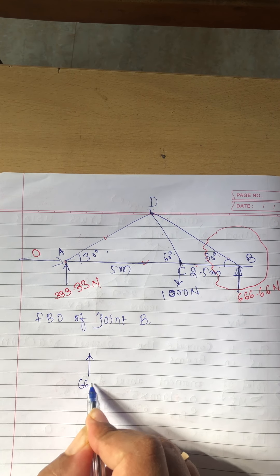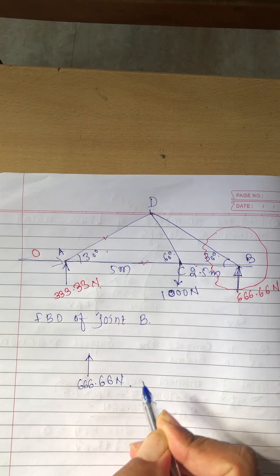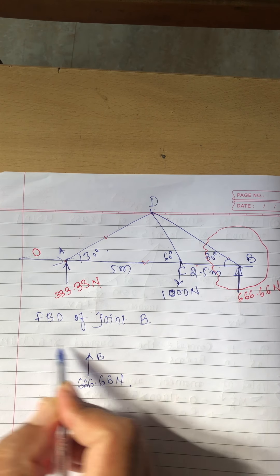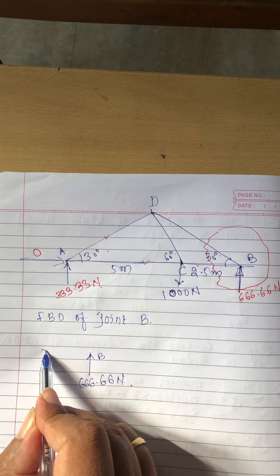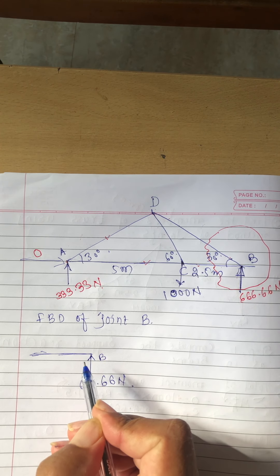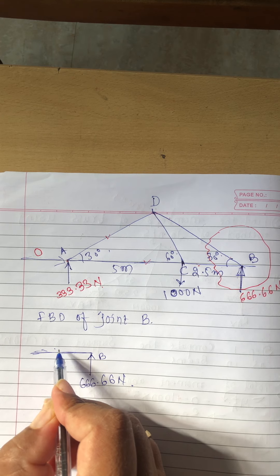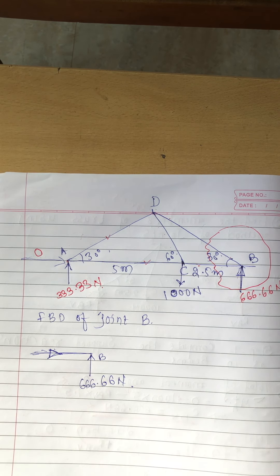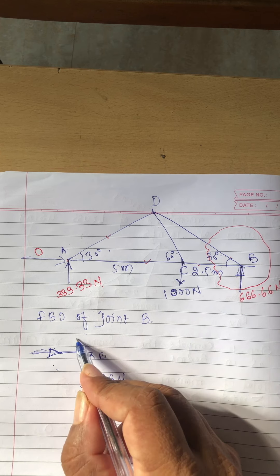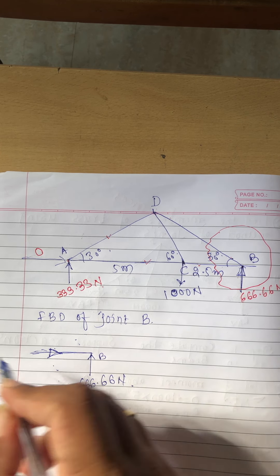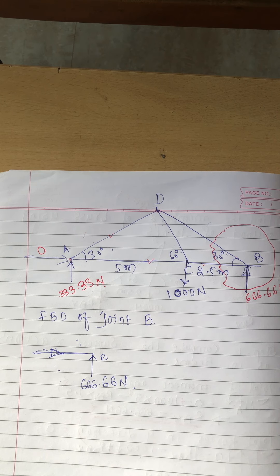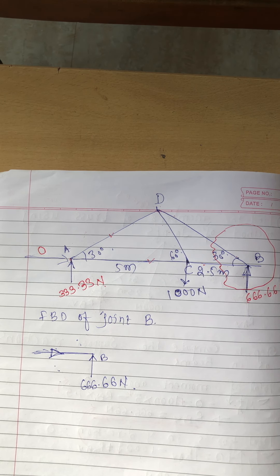FBD of joint B: one vertical force is there, 666.66 Newton. As I am cutting the member, the member force comes into picture. Member CB is to the left of B — mark it to the left. The direction: in whatever way it has been given, you need to mark it here. You can mark the arrow either towards the right or towards the left — that won't matter. Mechanics will tell you the correct direction afterwards. If your answer is positive, the assumed direction is correct; if negative, the direction needs to be reversed.